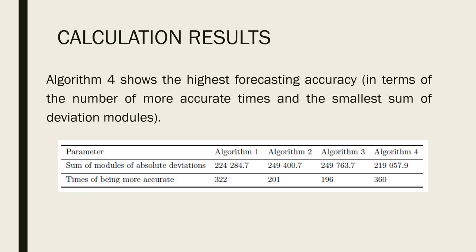Example of results is written in the paper. Because we are short on time, I'm skipping this information and just giving you the calculation results of all four algorithms. Algorithm four shows the highest forecasting accuracy. How I determined the best accuracy? I used two parameters. First, sum of modules of absolute deviations, which is just a numerical value only needed to determine the lowest possible value. The lowest value of these sums is the best algorithm with the lowest amount of deviations.